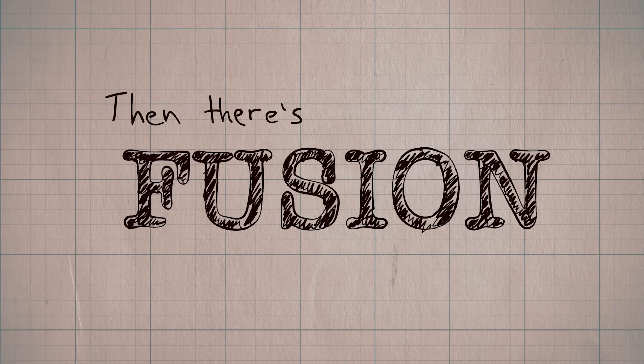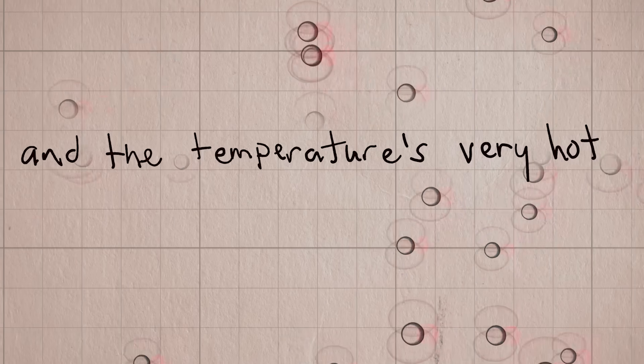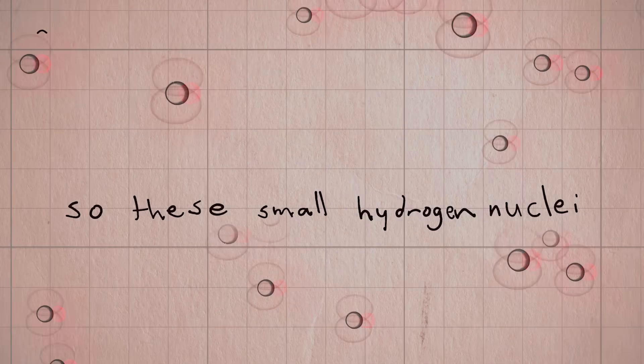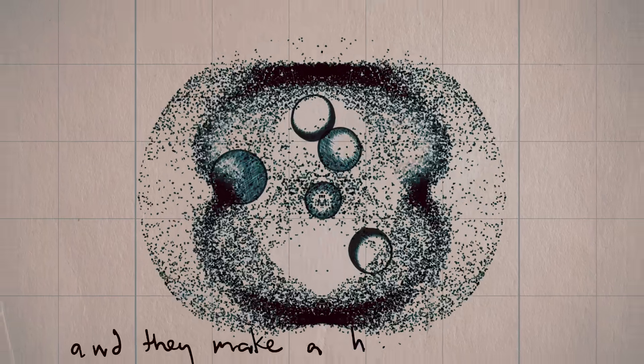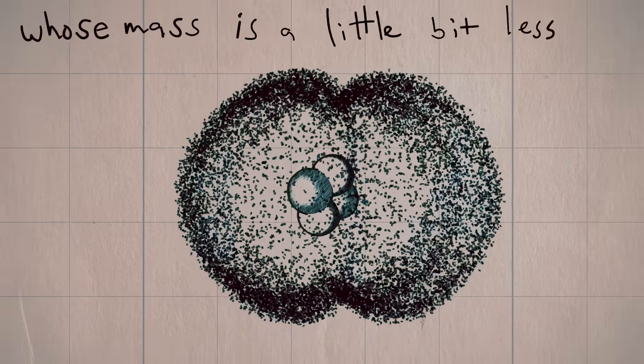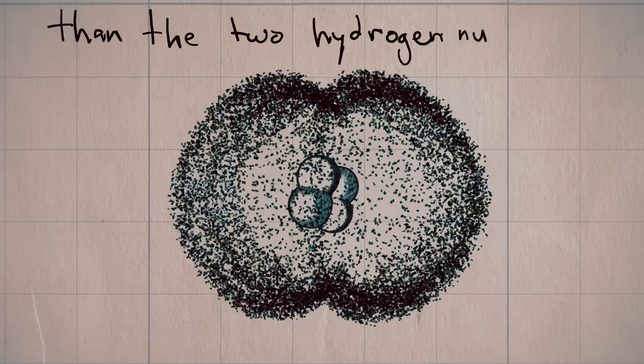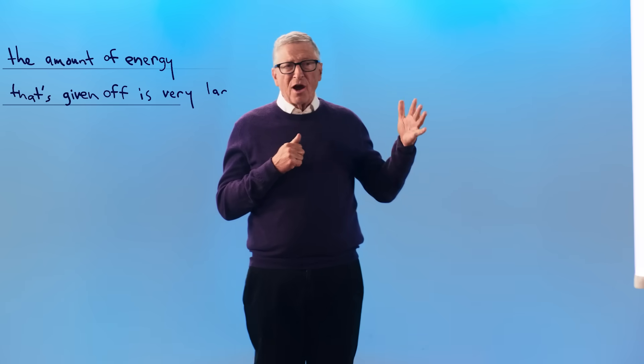Then there's fusion, where you're taking small atoms, and the temperature is very hot. So these small hydrogen nuclei run into each other and fuse together, and they make a helium nucleus whose mass is a little bit less than the two hydrogen nuclei. And so the amount of energy that's given off is very large.